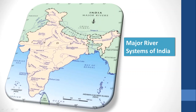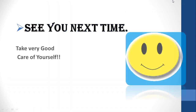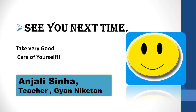Next is Krishna, which also originates from the Western Ghats, flows eastward, and falls into the Bay of Bengal. Then Kaveri. These are the major river systems of India. That's all for today — see you next time, and take very good care of yourself. Thank you.